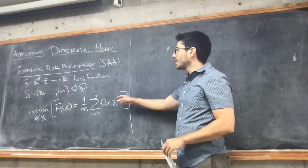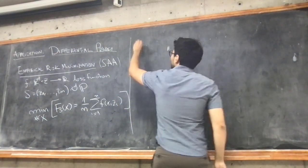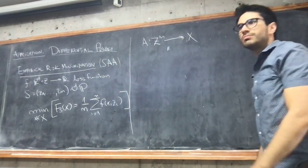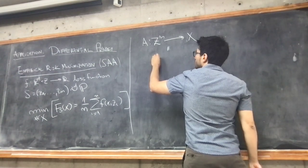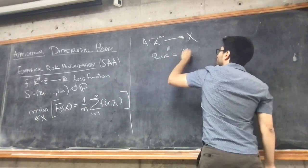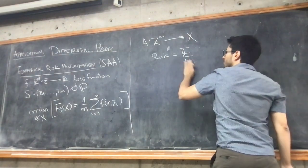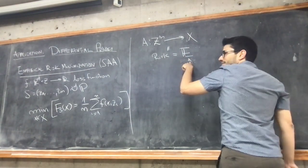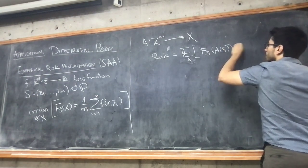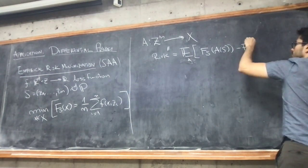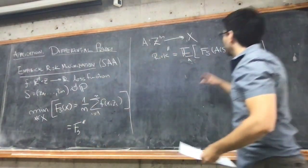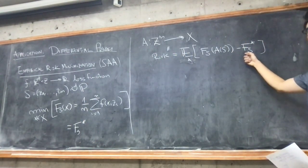We're interested in solving this problem. Solving it means designing an algorithm A that takes n data points and comes up with a solution x. We're going to evaluate the performance of this algorithm in terms of what we can call the expected risk — the expectation over the randomness of A — of the value minus the minimum value F_S^*, which is the optimal value. Our measure of efficiency is how close we can get to the optimal error.